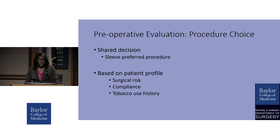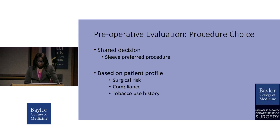If someone has a prolonged history of poorly controlled diabetes, or they've been on insulin for over a decade, a gastric bypass or one of the malabsorptive procedures might be a better option. We also consider the patient's surgical risk, their likelihood of compliance, and their tobacco use history. For example, we sometimes see very young patients who are off to college with a high likelihood they won't follow up after surgery, so it's better to offer them a more restrictive rather than malabsorptive operation. It's very individualized.